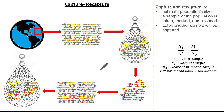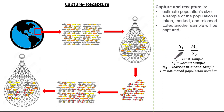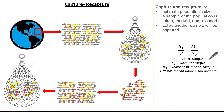This is the formula we use for Capture and Recapture. It states that the proportion of the first sample to the total population is equal to the number of items marked in the second sample to the total in the second sample.